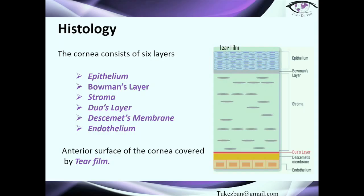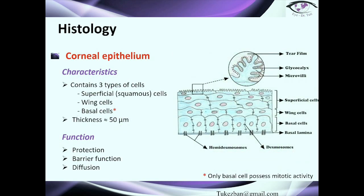Now, we have to talk briefly about histology. As shown in this slide, there are 6 layers of the cornea: epithelium, Bowman's layer, stroma, Dua's layer, Descemet's membrane, and endothelium. Of course, the surface of the cornea is covered by the tear film. I will go through the main function and characteristics of each layer.